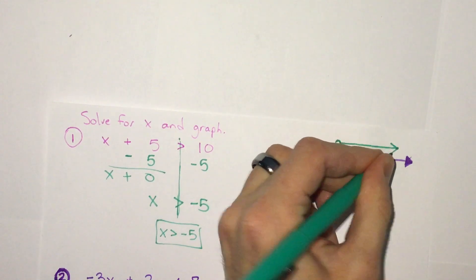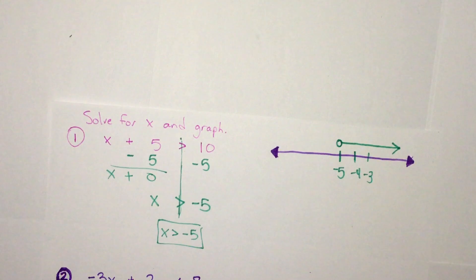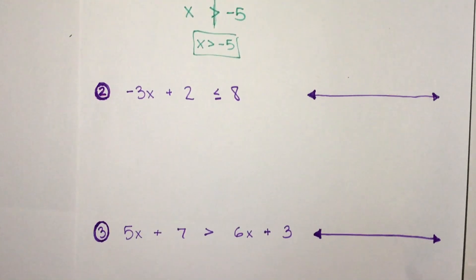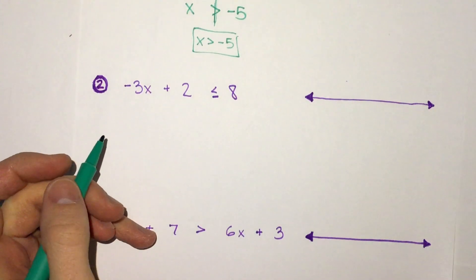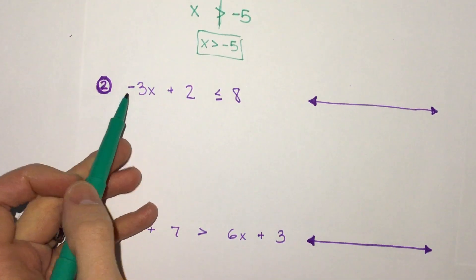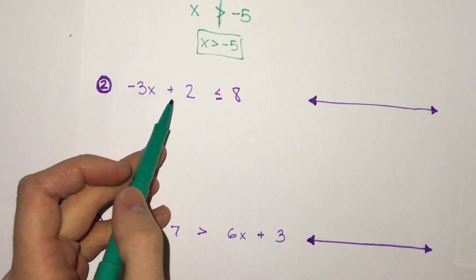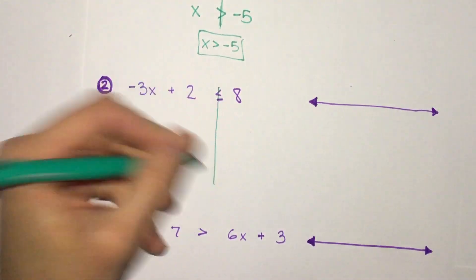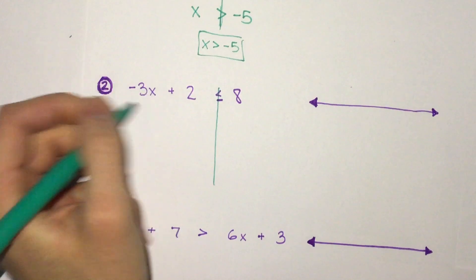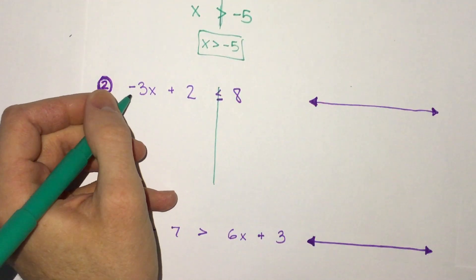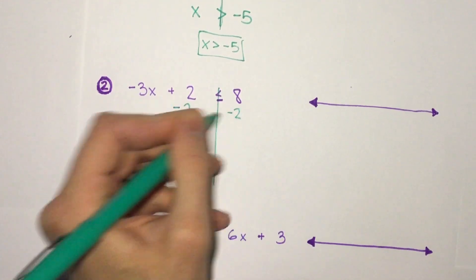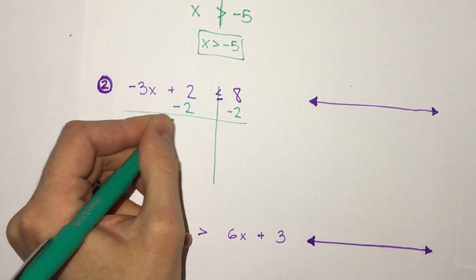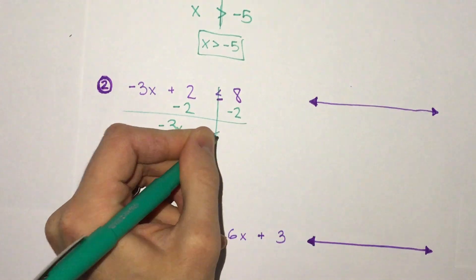Number 2 has one thing that we'll see is a little different with inequalities than equations. Right now we have negative 3x plus 2 is less than or equal to 8. We can put our little fence down, do the same thing on both sides. First we'll move our plus 2, move the addition. So we get 2 minus 2 is 0. We get negative 3x is less than or equal to 6.